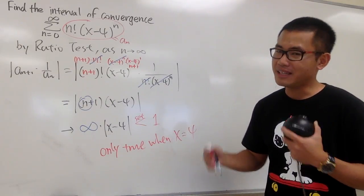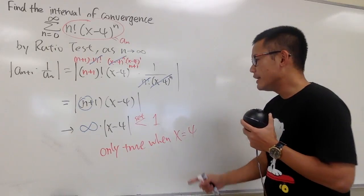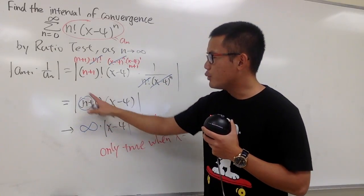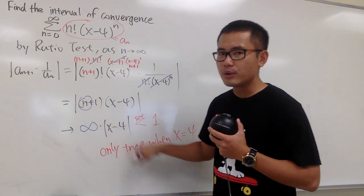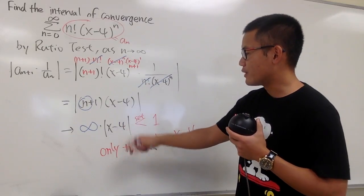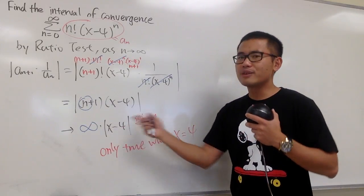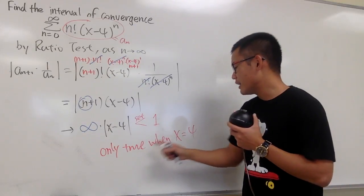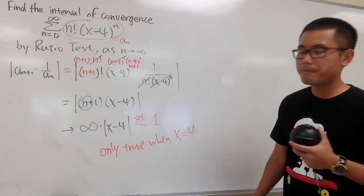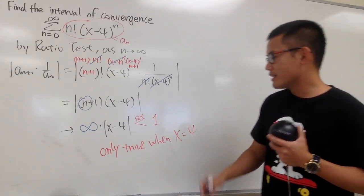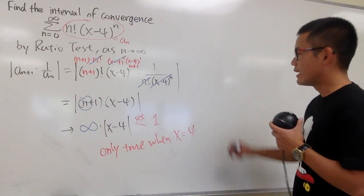In this kind of situation, whenever you end up with infinity times absolute value of (x minus c), this is never going to be true unless you pick x equal to the center. In this case, once again, this is how we are going to answer it.